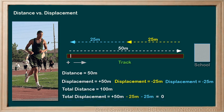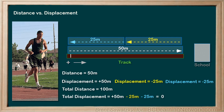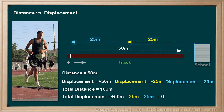Let's consider Dylan's run using the vector arrows. We could show the first half of his run with this arrow, then the second part of his run would be shown here, and the third part with this arrow. The three arrows added lead us right back to the starting point, and therefore the resulting total displacement would have to be zero.